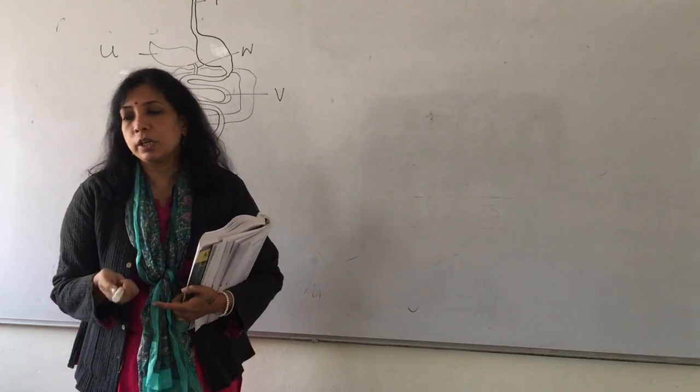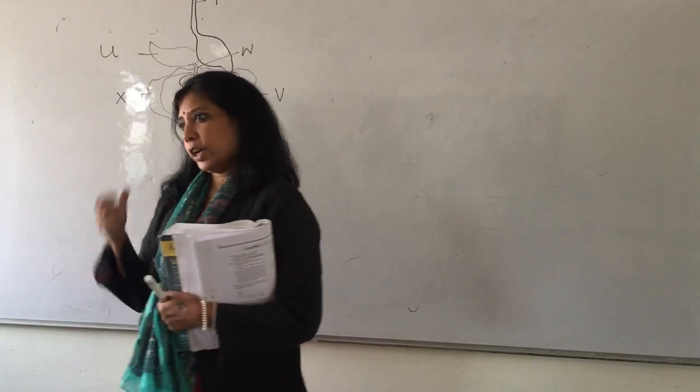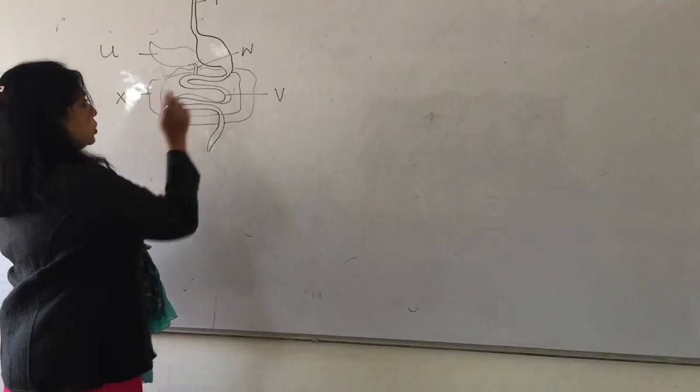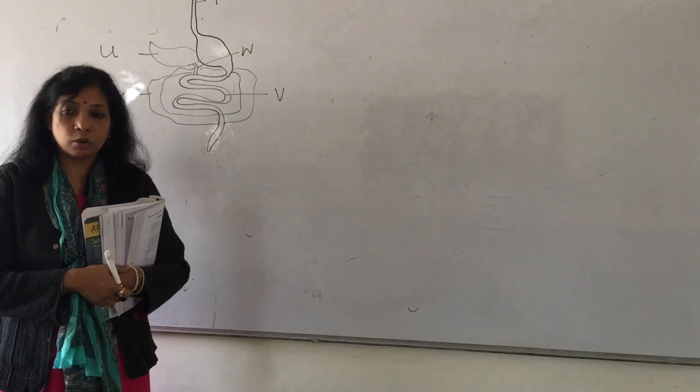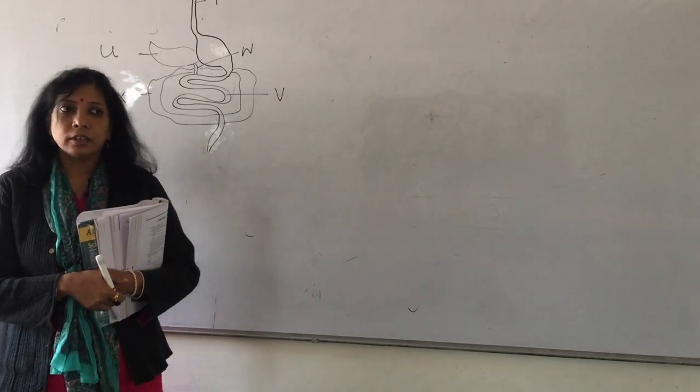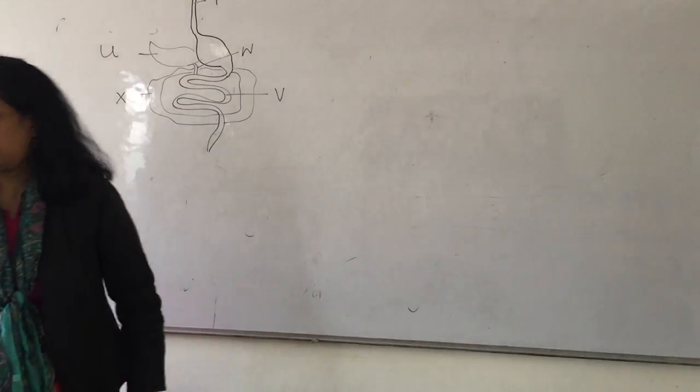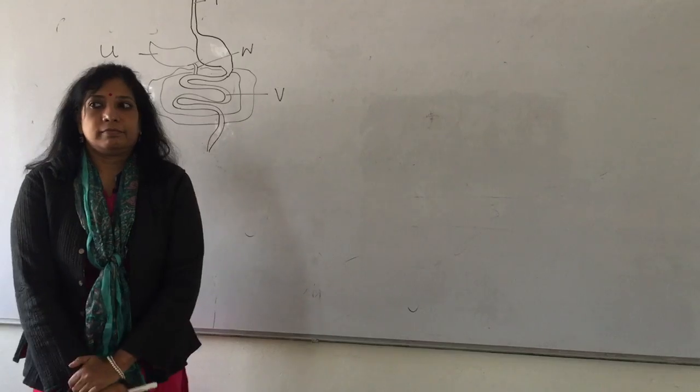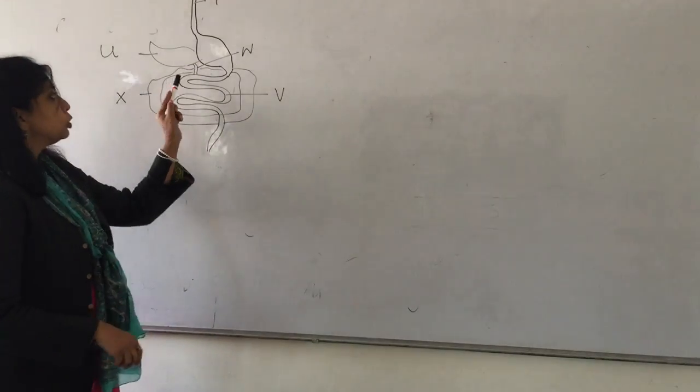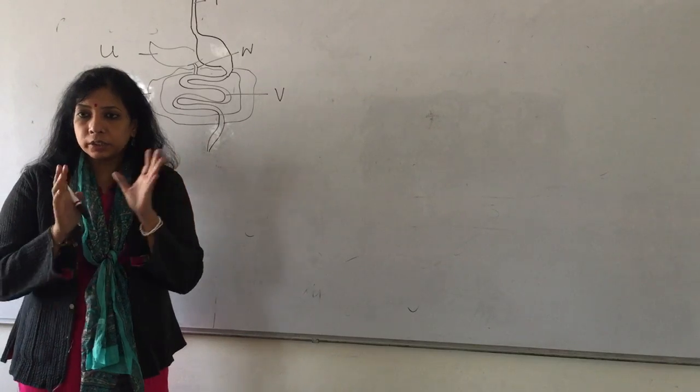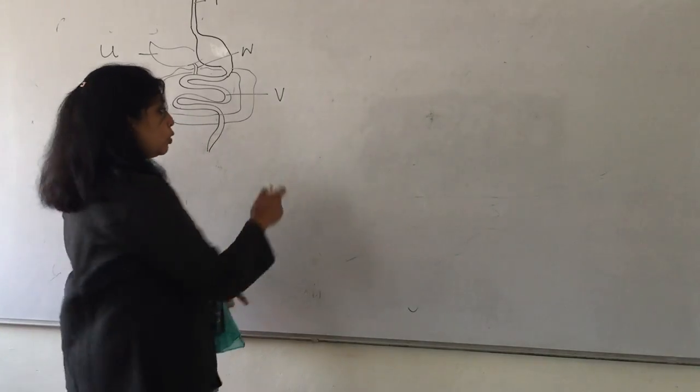Bile juice is secreted from W - first answer correct, half mark. What is its role in fat digestion? It neutralizes the food and makes it easier to digest. Let me explain again. Bile juice is secreted from the liver, then it is stored in the gallbladder. It does two functions.